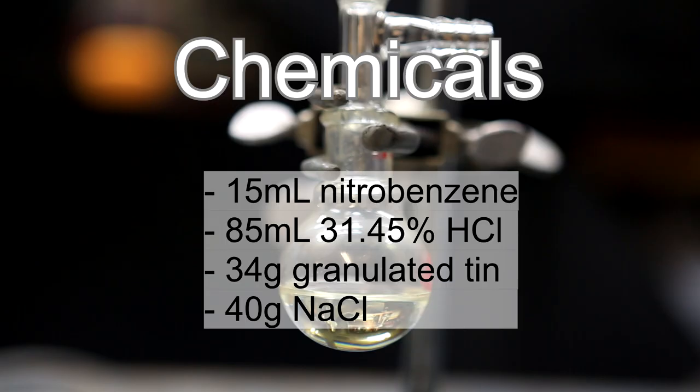So now to list off the chemicals that I used. In terms of reagents, I used 15 milliliters of nitrobenzene, about 85 milliliters of 31.45% hydrochloric acid, and about 34 grams of granulated tin. And I also used about 40 grams of table salt.